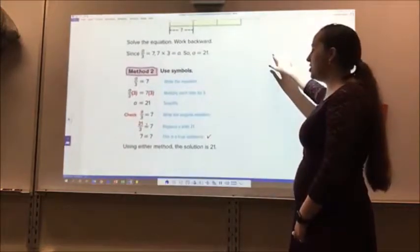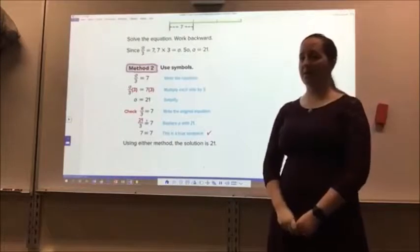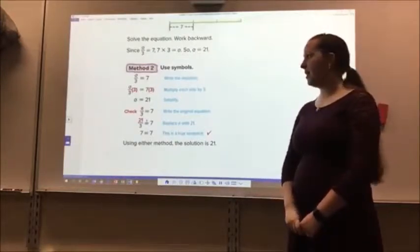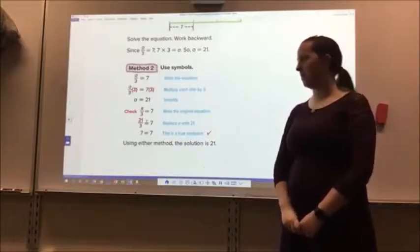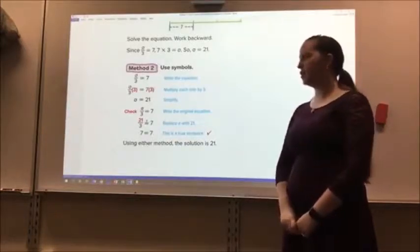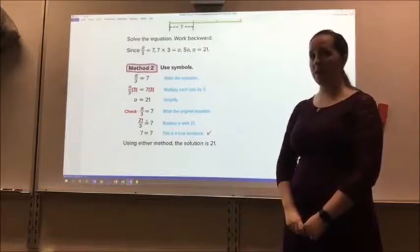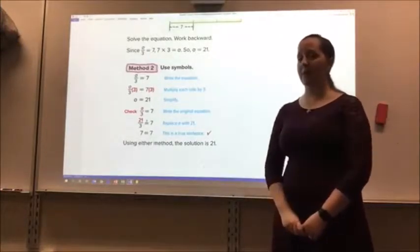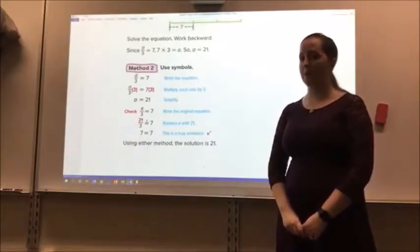Method 2, I can use symbols. A divided by 3 equals 7. Multiply both sides by 3, and I get 21. Then I can check my solution by substituting in 21 for A. 21 divided by 3 does equal 7. So using either method, the solution to my problem is 21.